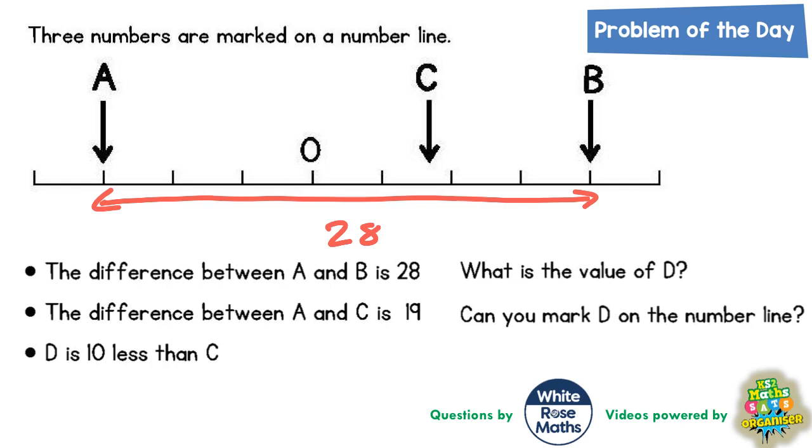One, two, three, four, five, six, seven. So that's seven gaps. So if we split this 28 into seven, in other words, 28 divided by seven, we will find out what each gap is worth. So 28 divided by seven is four. So each gap is worth four, which means we're going up in fours.